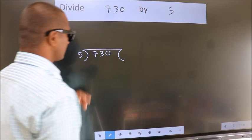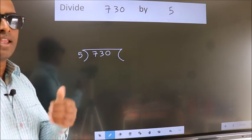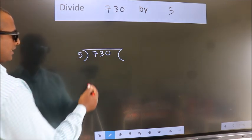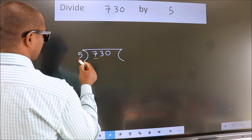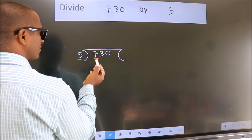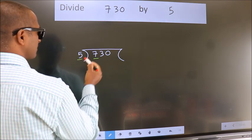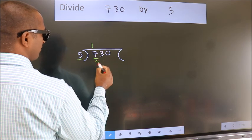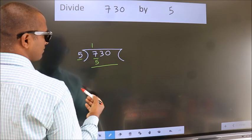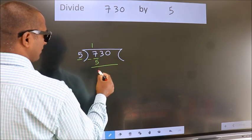This is your step 1. Next, here we have 7, here 5. A number close to 7 in the 5 table is 5 once 5. Now, we should subtract. We get 2.